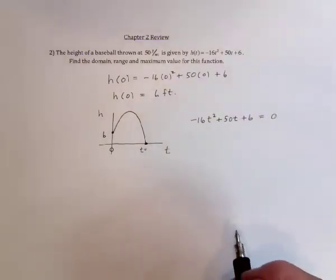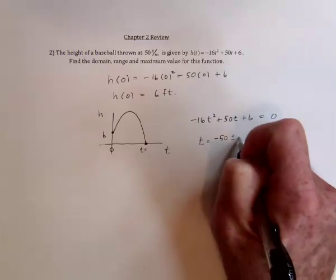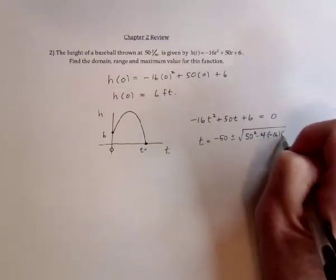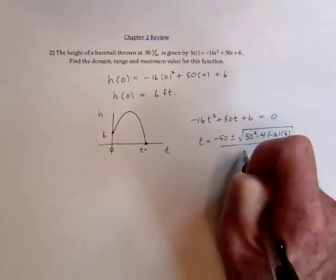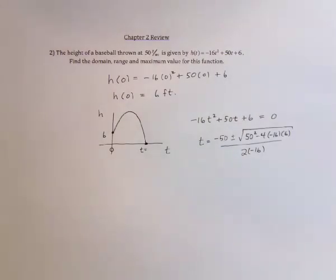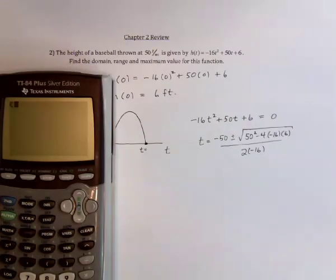Then use the quadratic formula to find out when is it going to be on the ground. So that's going to be t equals negative b plus or minus the square root of b squared minus 4 times a times c all divided by 2 times a.